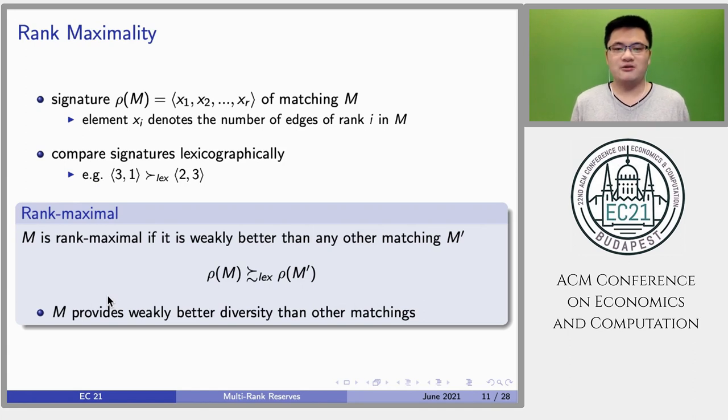Given the matching in the rank reservation graph, its signature consists of a vector of numbers, where each element xi represents the number of edges of rank i. We compare signatures in a lexicographical manner. For instance, signature 3-1 is better than signature 2-3, even if the latter matches more edges than the former. Note that this follows the idea that the school attempts to first match edges of rank 1 than edges of rank 2, and so on.